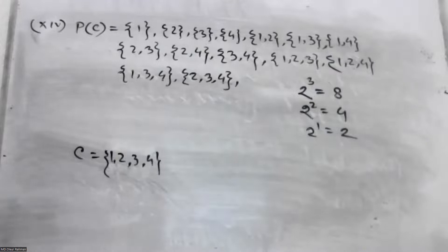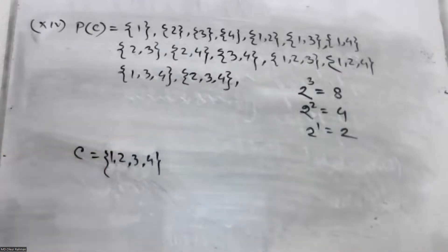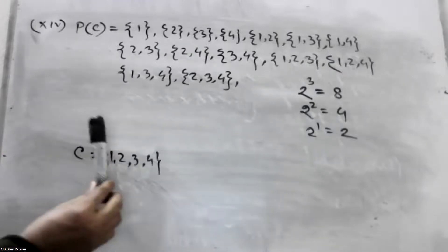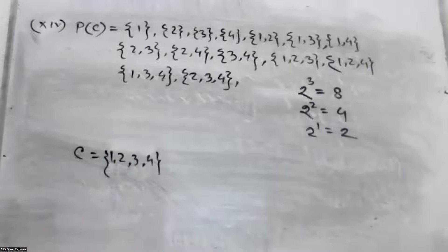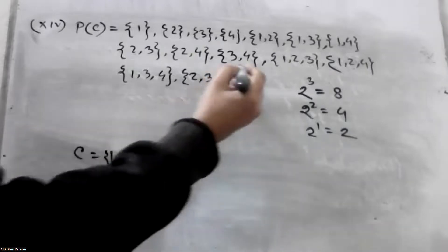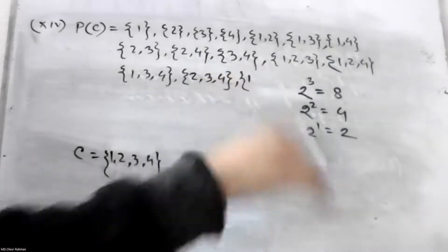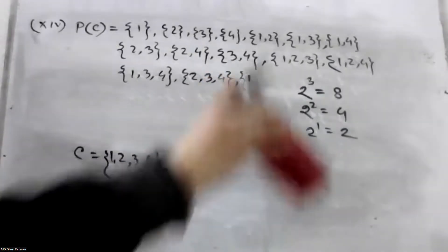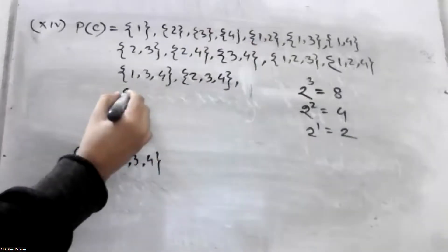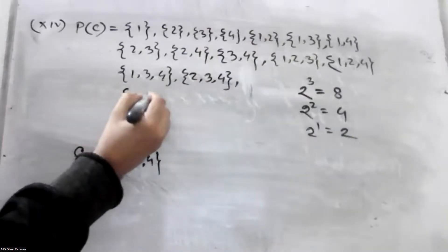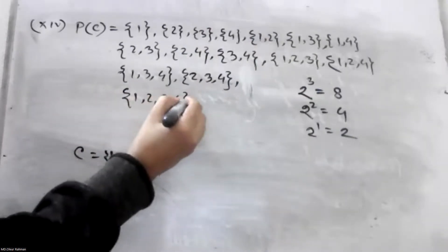The same thing we should do. We should say, what's the problem? 1, 4, 3, 5, and then 4. 1, 2, 3, 4.